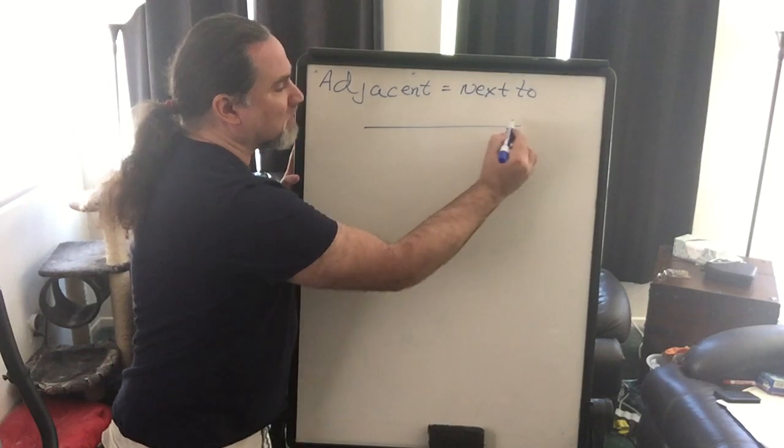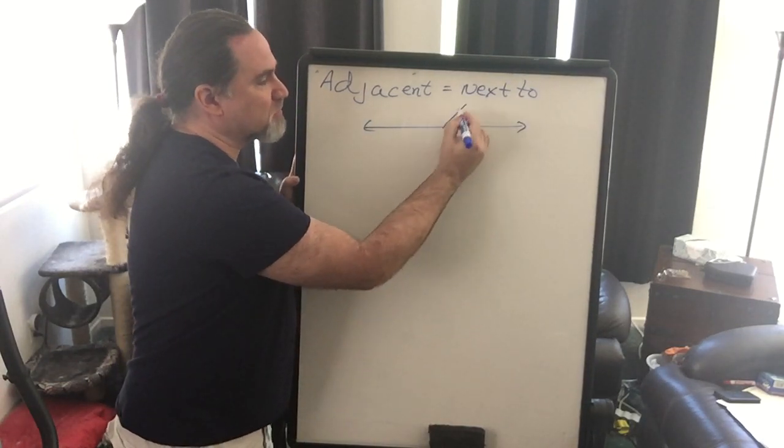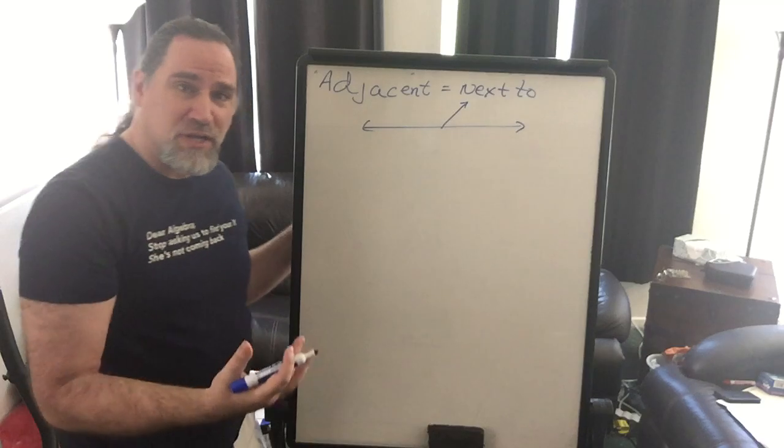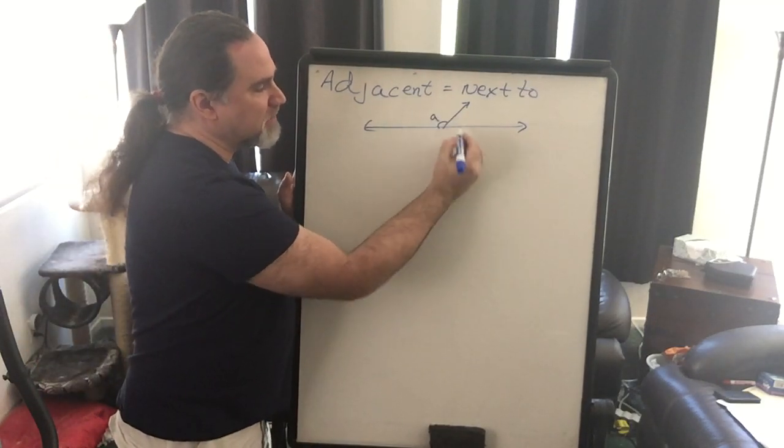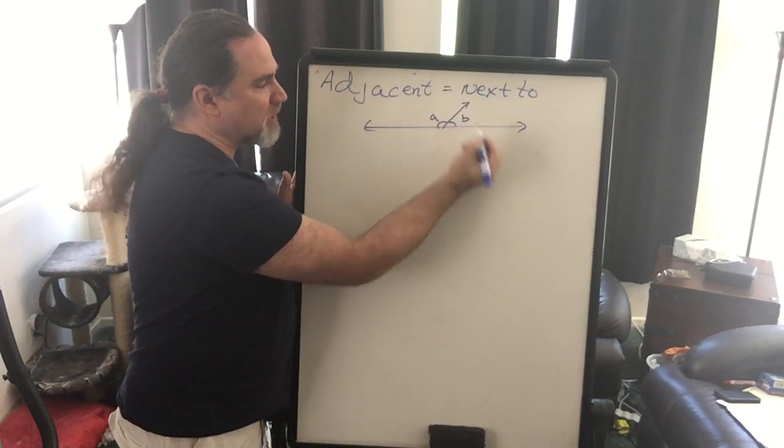So if we were to take a line such as this and cut it with a transversal, we would create two angles. This angle right here, which we'll call angle A, and this angle right here, which we'll call angle B.